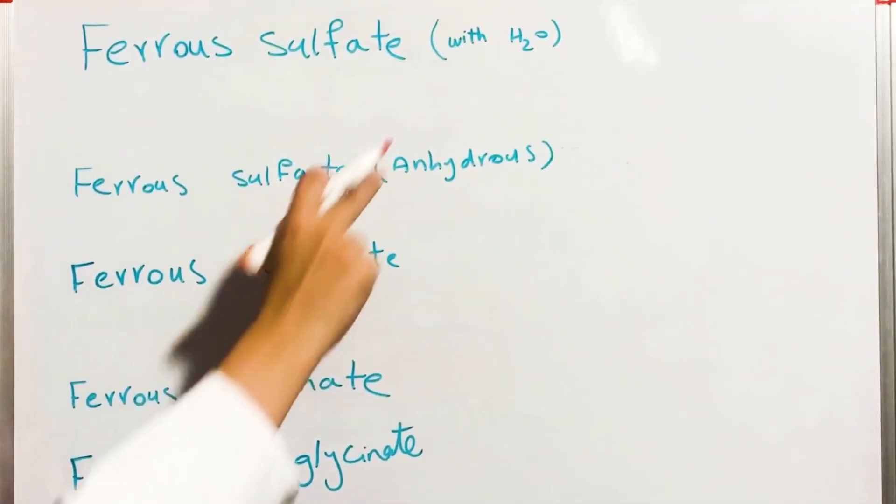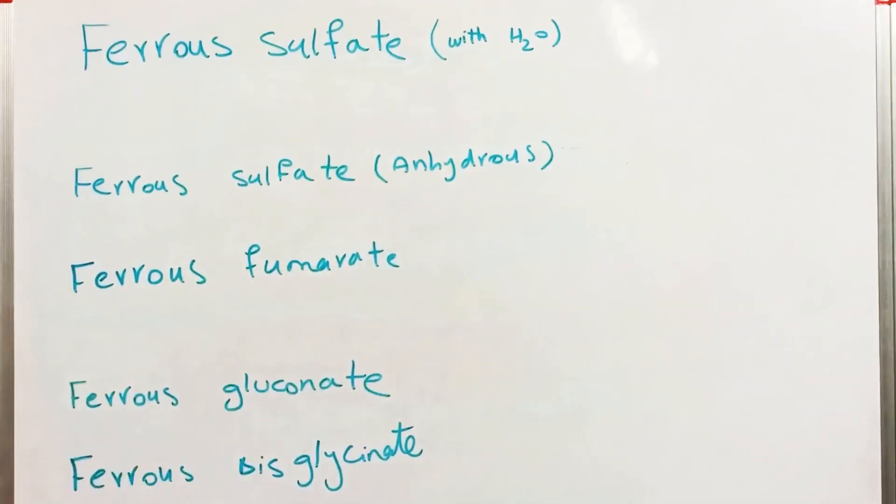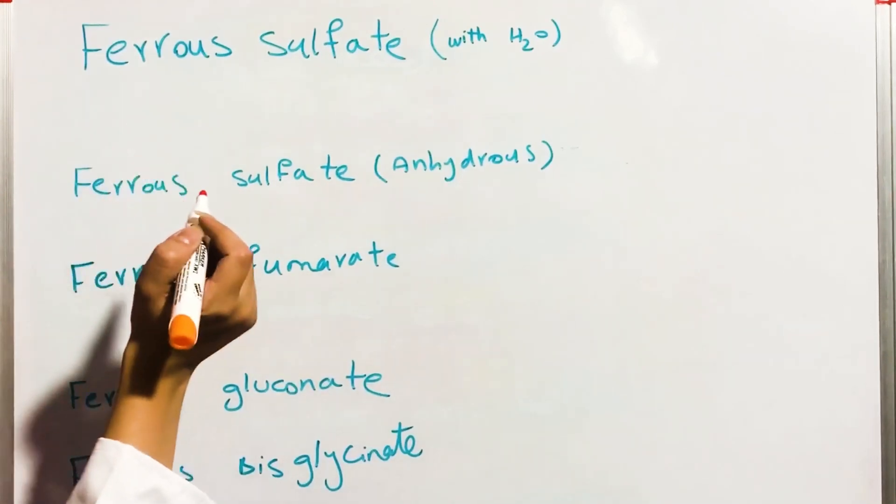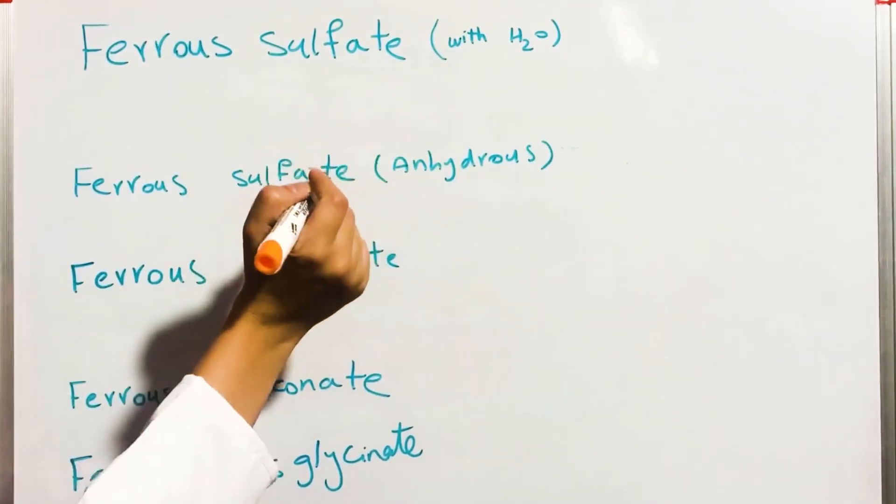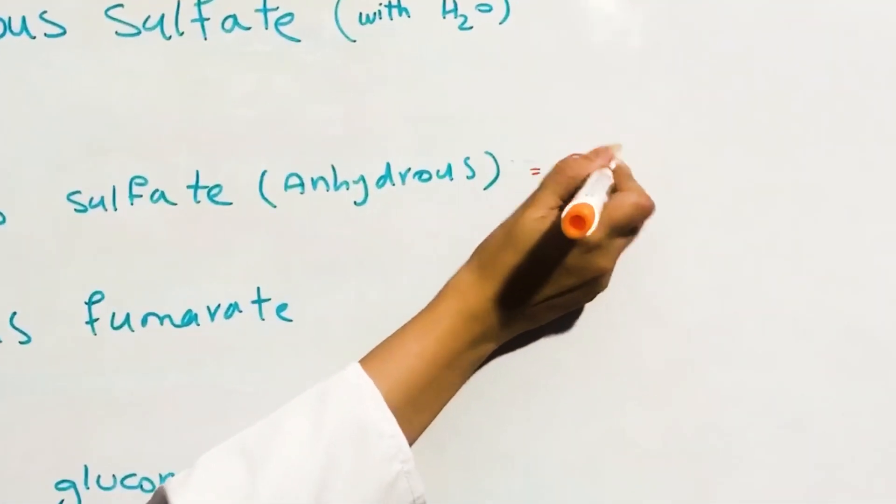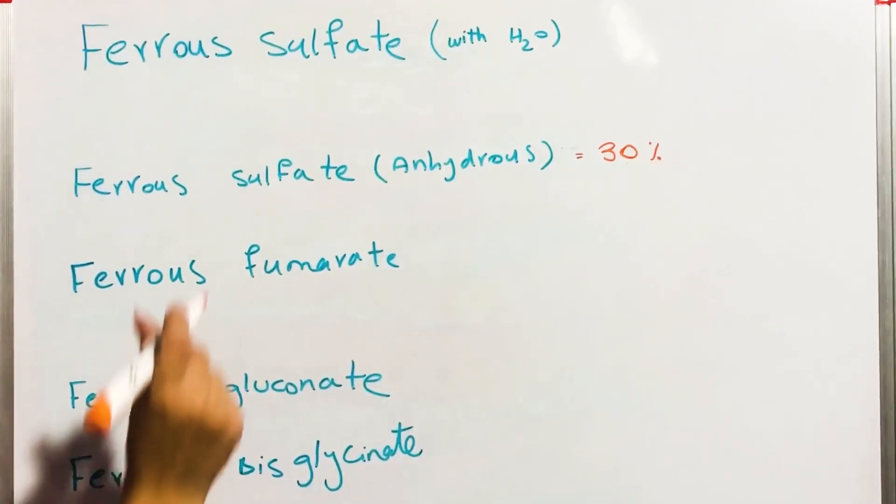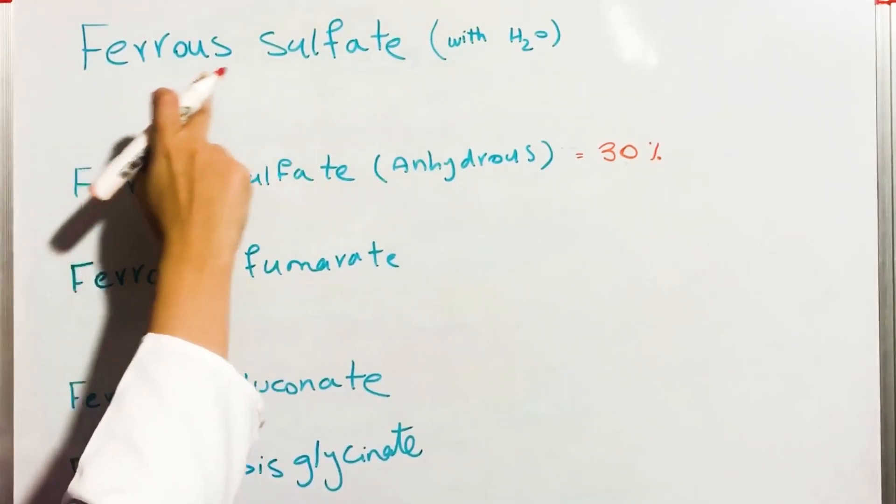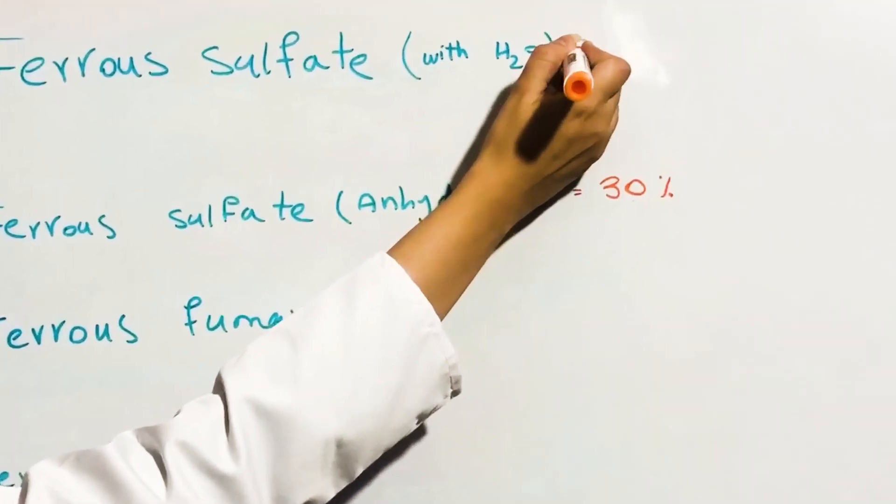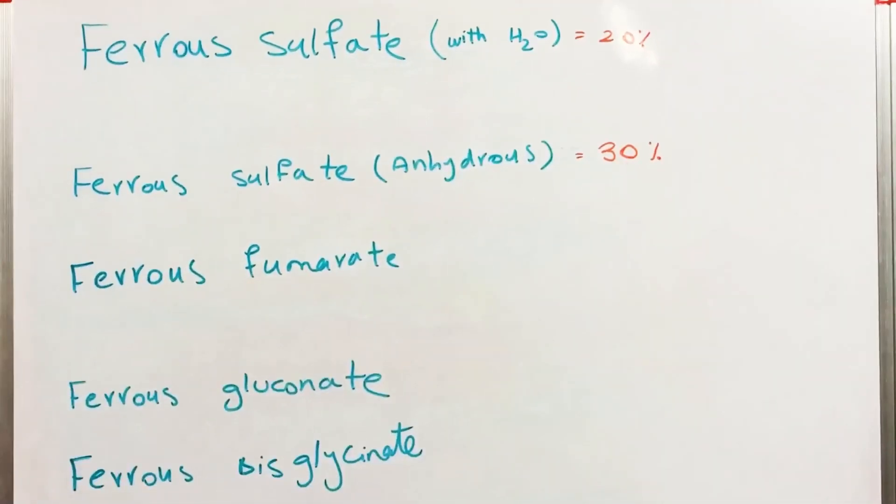Ferrous sulfate hydrous or anhydrous or dried ferrous sulfate have different amounts of elemental iron in them. Ferrous sulfate dried contains 30 percent elemental iron in it.